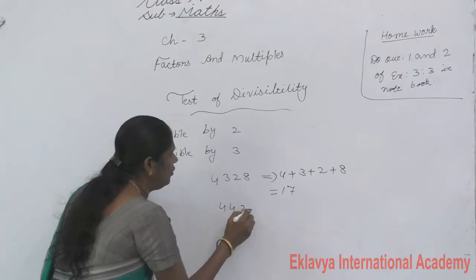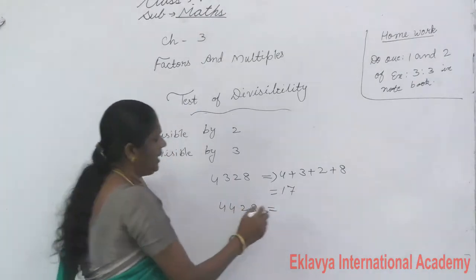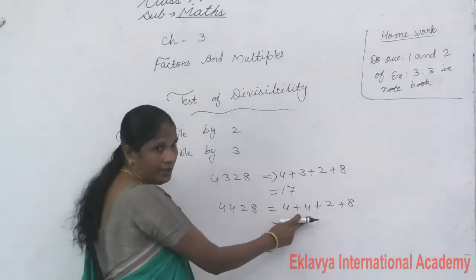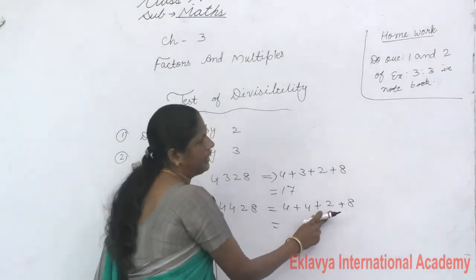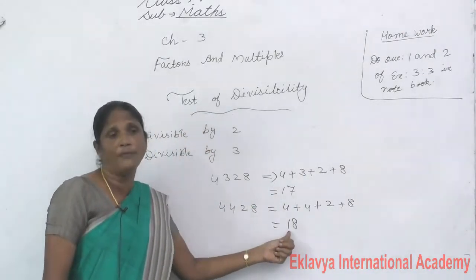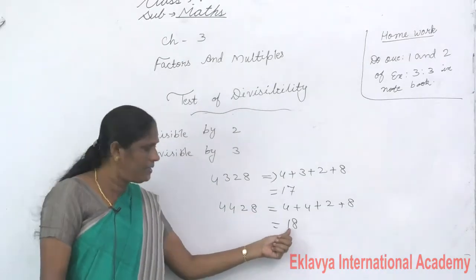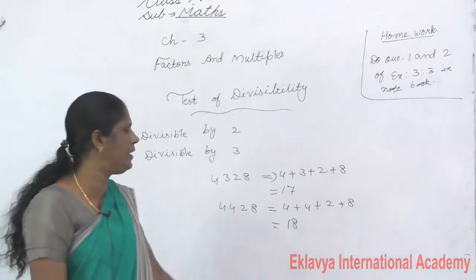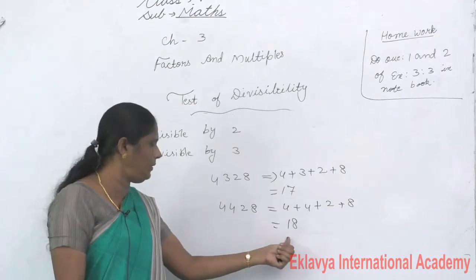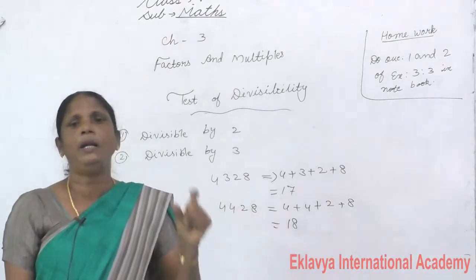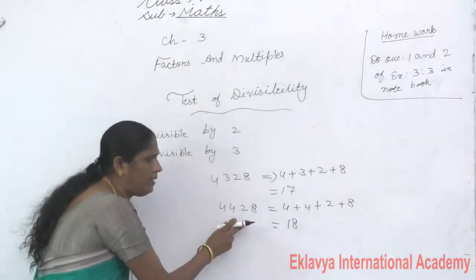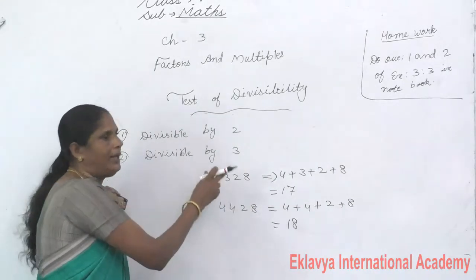One more example: 4428. Sum of digits: 4 + 4 + 2 + 8 = 18. Is 18 a multiple of 3? Yes — 3 × 6 = 18. Therefore 4428 is divisible by 3.